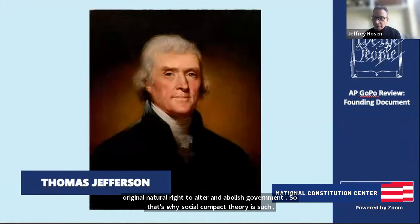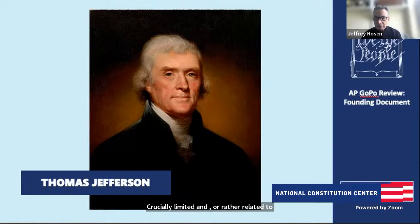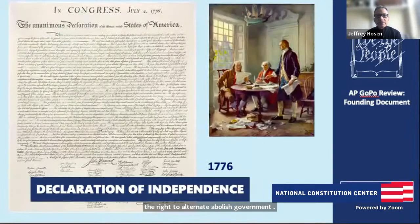Social compact theory is crucially related to the right to alter and abolish government. The right of revolution is the way of ensuring that the king or government keeps its end of the bargain — and that's what the Declaration said the king didn't do.